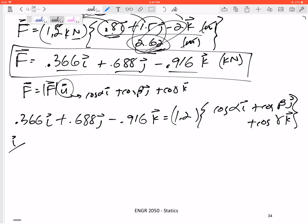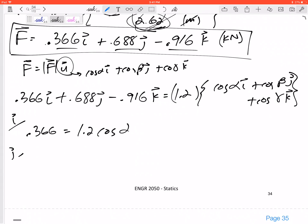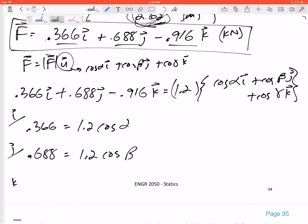Alright, so this is really three equations in this one equation. It's the i equation: what's the i equation? On the left-hand side 0.366, on the right-hand side 1.2 cosine alpha. What's the j equation? 0.688 equals 1.2 cosine beta. And the k equation is negative 0.916 equals 1.2 cosine gamma.